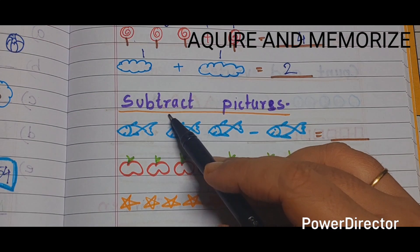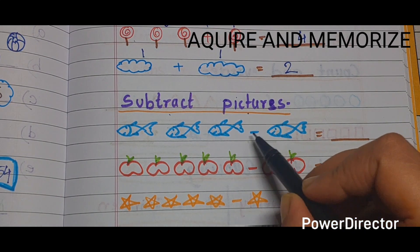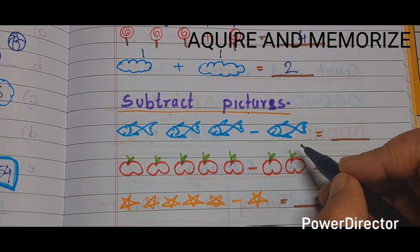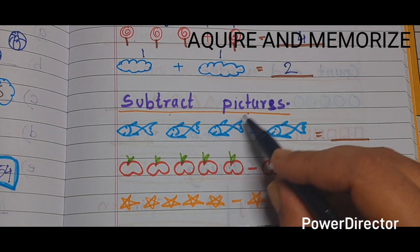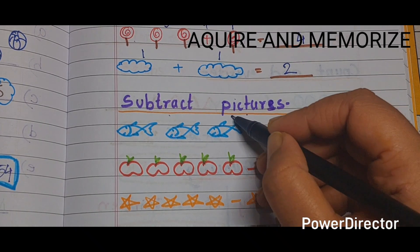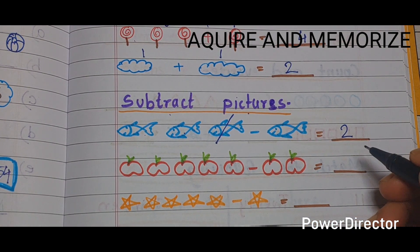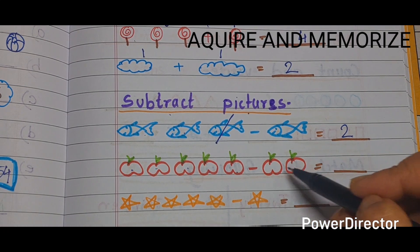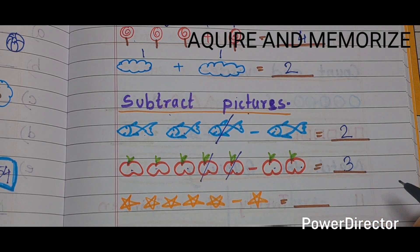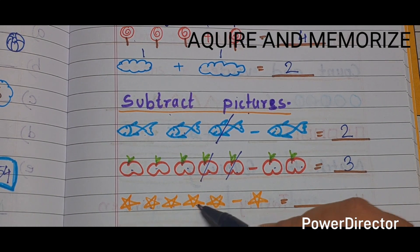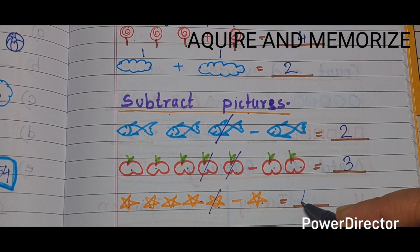Next section is 'subtract pictures'. We have pictures and a subtraction sign. There are 3 fish; we subtract 1 fish, so we cut 1 fish — we are left with 2. Next: 5 apples subtract 2 — we cut 2 apples, left with 3. Next: 5 stars subtract 1 star — left with 4 stars, so we write 4.